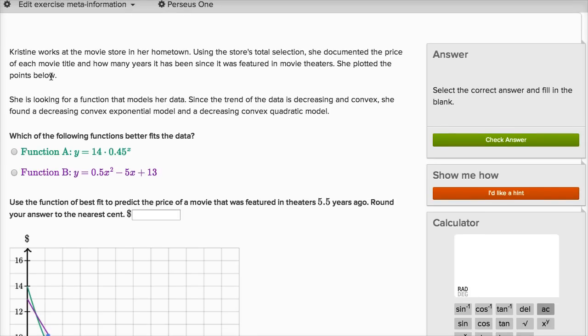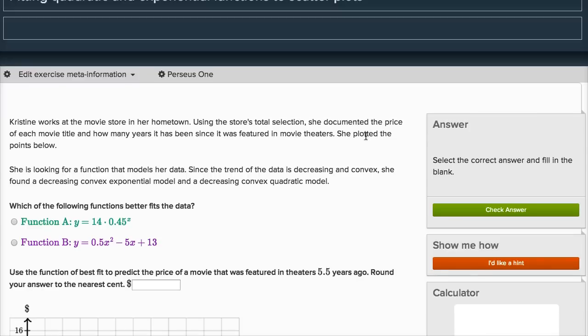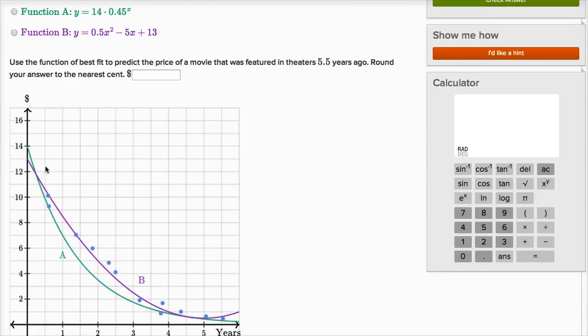So once again, she documented the price of each movie title as a function of how long it's been, how many years since it was featured in movie theaters. She is looking for a function that models her data. Since the trend of the data is decreasing and convex, and you see it here, it's decreasing, it's definitely decreasing and convex.